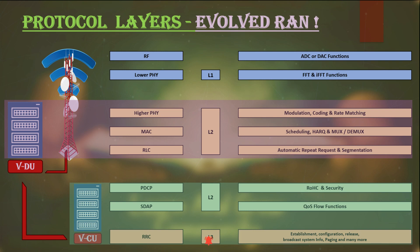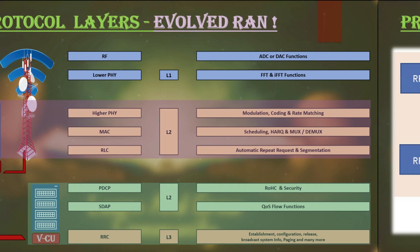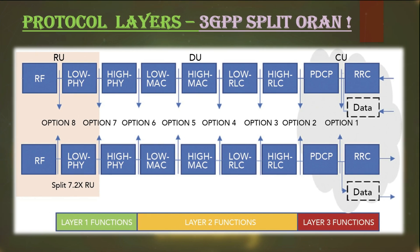Looking at the O-RAN architecture from a protocol layer perspective, there can be many options for disaggregation. When 3GPP introduced this architecture, they suggested option 2 for the evolution of O-RAN. However, there are more options from option 1 to option 8, and the important split introduced by the O-RAN Alliance is O-RAN 7.2x, which is option 7.